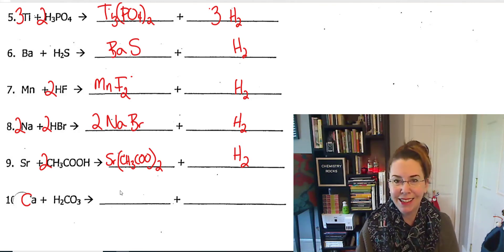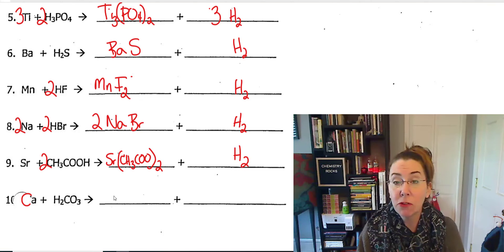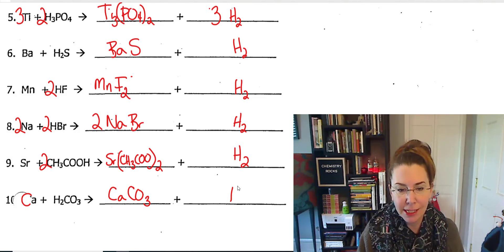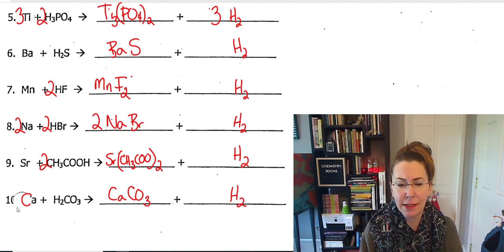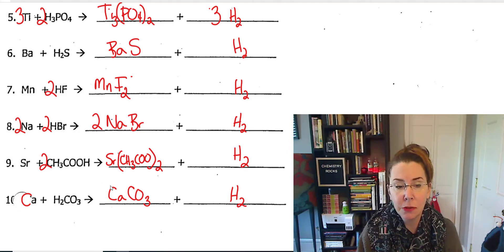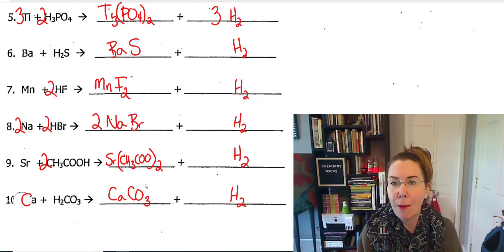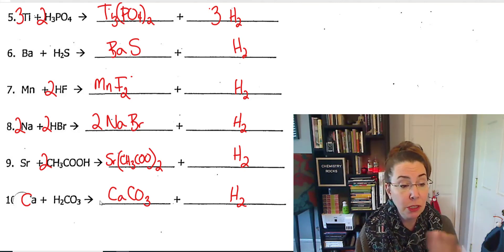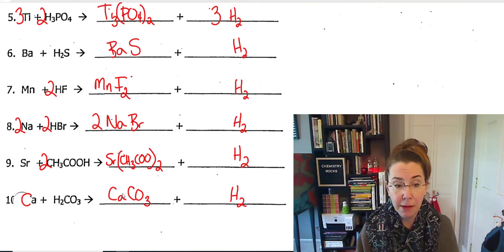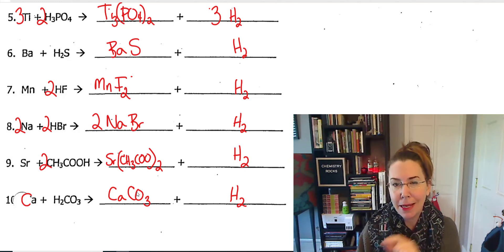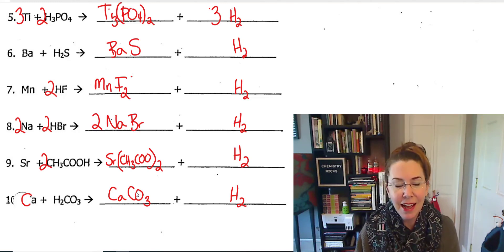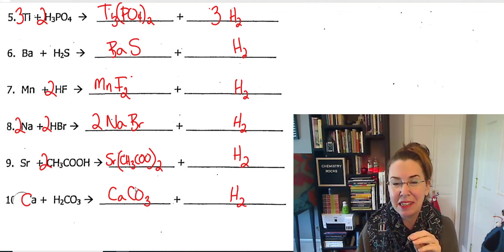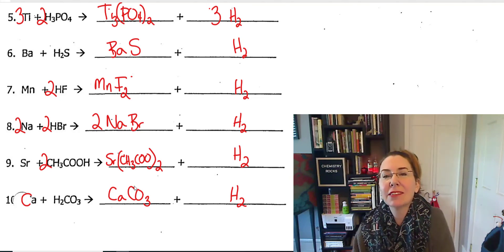So let's go to number 10, our last one. We're going to form calcium carbonate as our salt, and we have our hydrogen gas. Calcium has a charge of plus 2, carbonate has a charge of minus 2. So those charges balance out. We don't have to do anything special. It's already balanced. By the way, calcium carbonate is the main component of eggshells, and this is a reaction that technically kind of happens inside chickens when they form those eggshells. It's kind of cool.